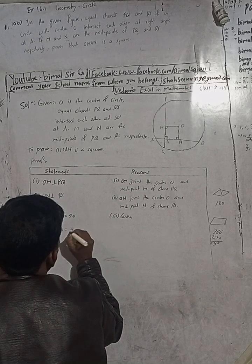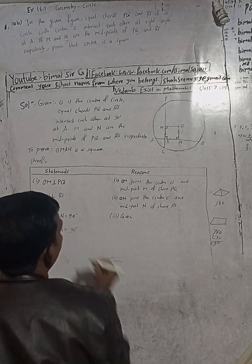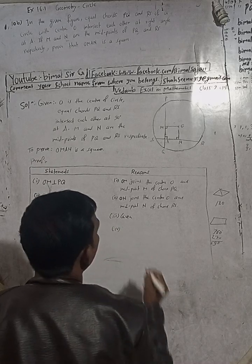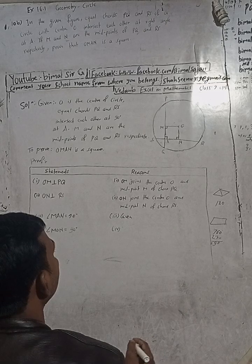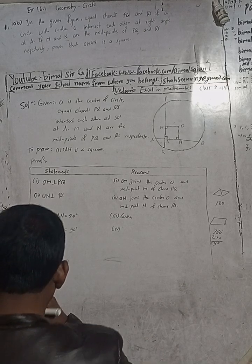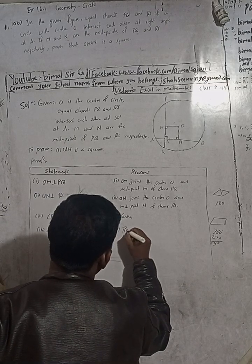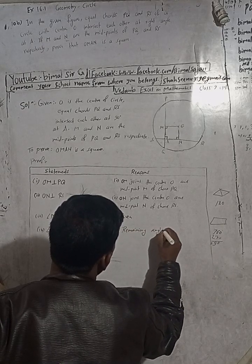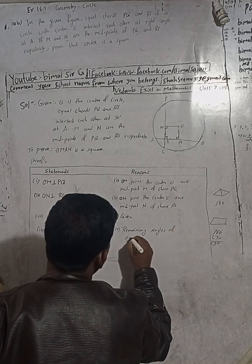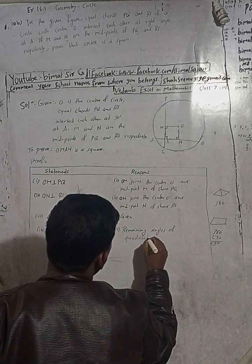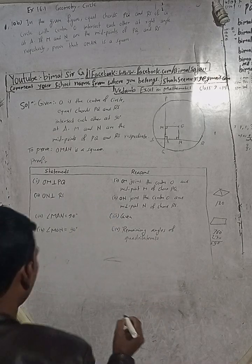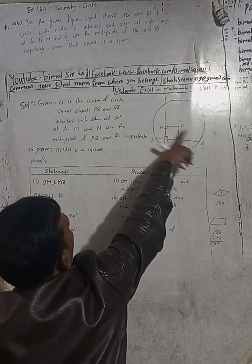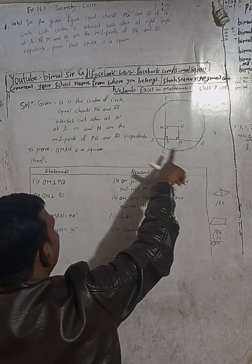The remaining angle in quadrilateral OMAN — that is angle MON — is equal to 360 minus 270 = 90 degrees. So all four angles of quadrilateral OMAN are equal to 90 degrees.